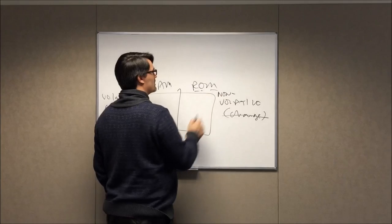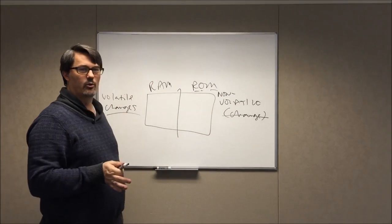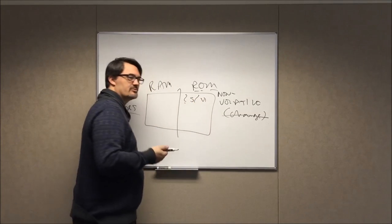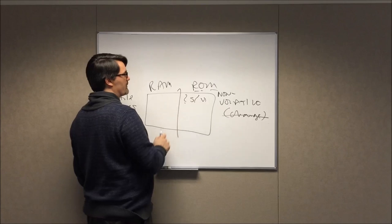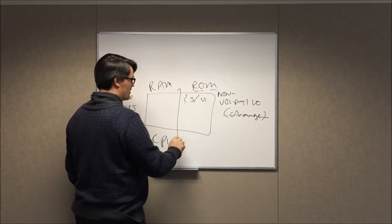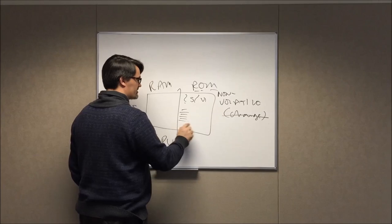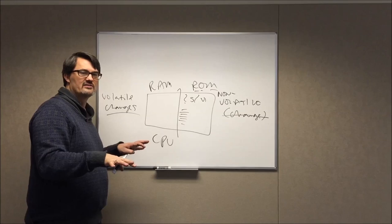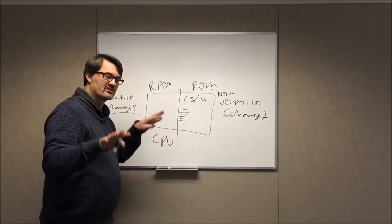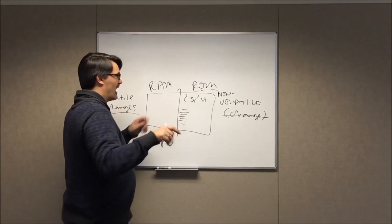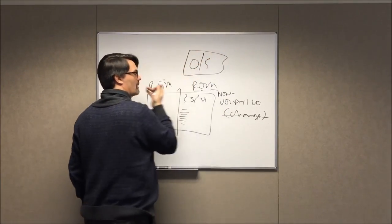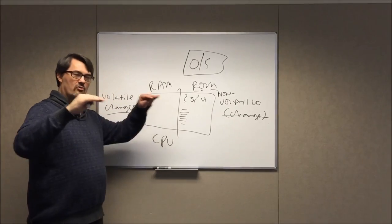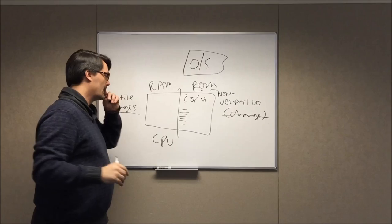ROM contains really important things — most importantly, what to do when the machine starts up. The CPU needs to know the exact series of instructions to set everything up: connecting to input/output devices, setting up memory, and kicking off the operating system — Windows, Linux, whatever it happens to be.